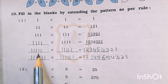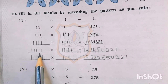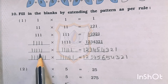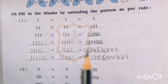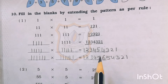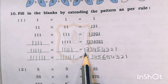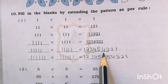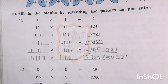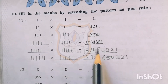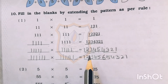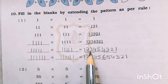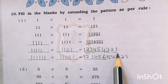Then again 5 times 1 we will use: 11111 multiplied by 11111. Here again 1, 2, 3, 4 we will write as it is, and then 4, 3, 2, 1 in reverse order. And in place of 4 we will write 5. So the answer is 1, 2, 3, 4, 5, 4, 3, 2, 1.